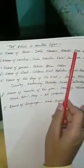Now, the article is omitted before, means you don't have to use THE in front of this. Names of towns: Delhi, Chennai, Mumbai, Agra. These are the names of towns, so you don't have to put THE in front of that.